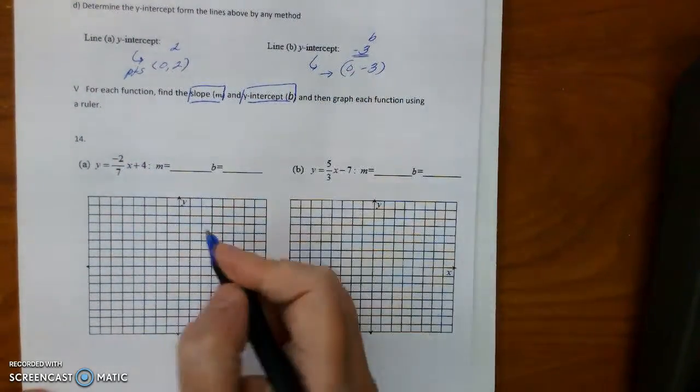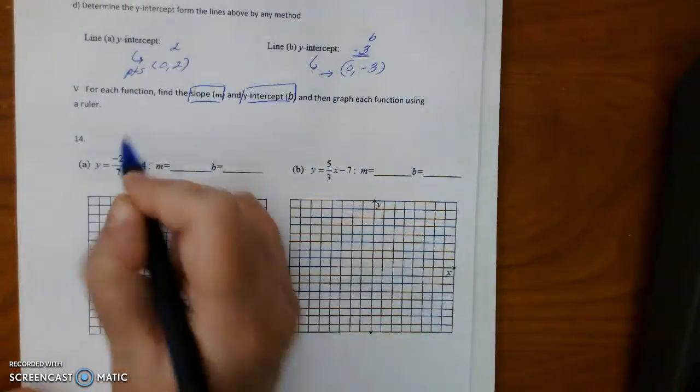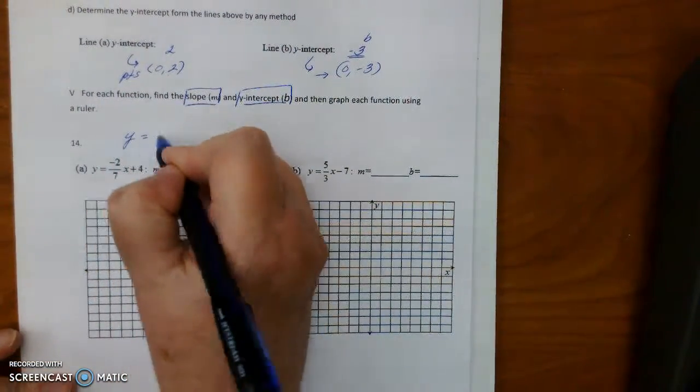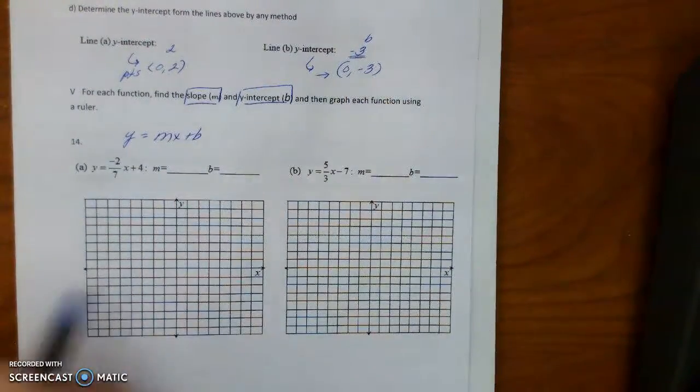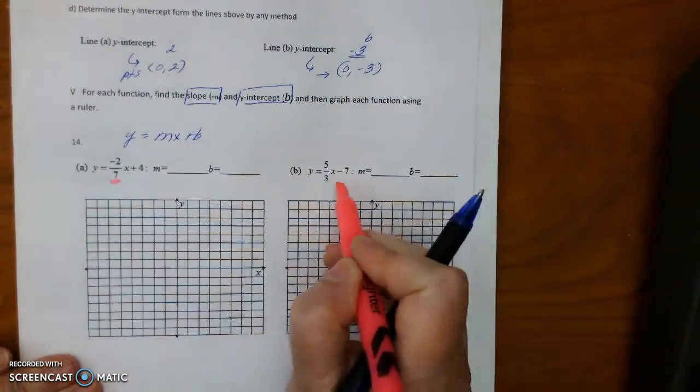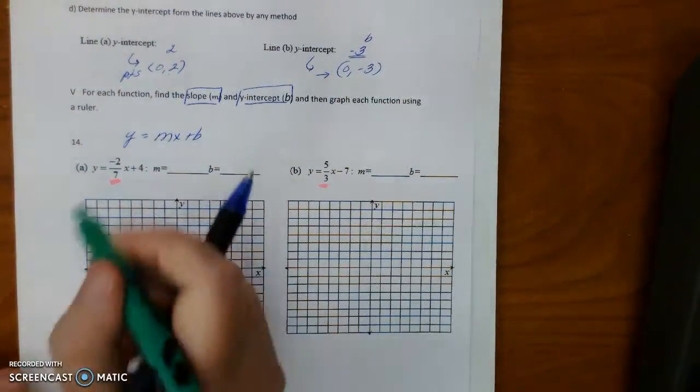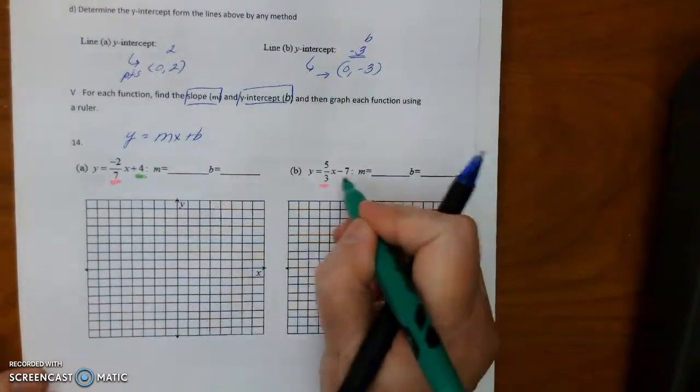So we know that Y equals M, X plus B. So this here is the M, and this would be the B, okay?